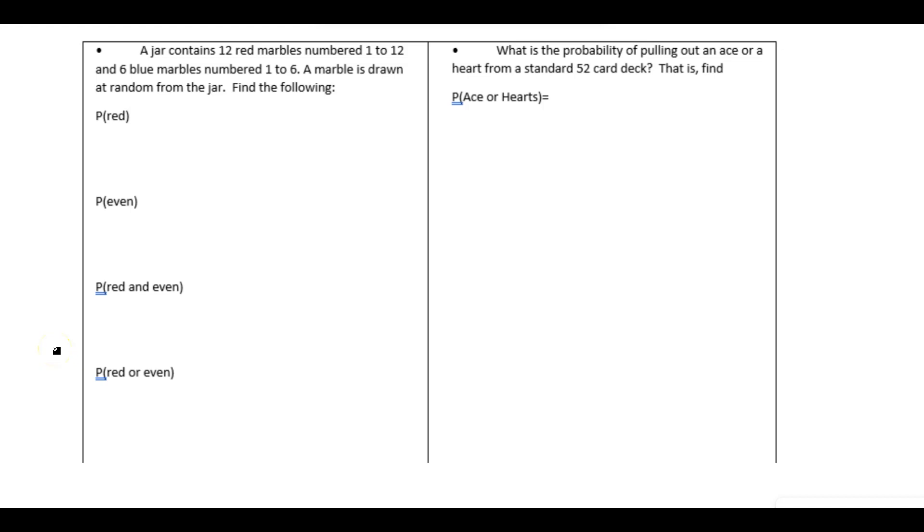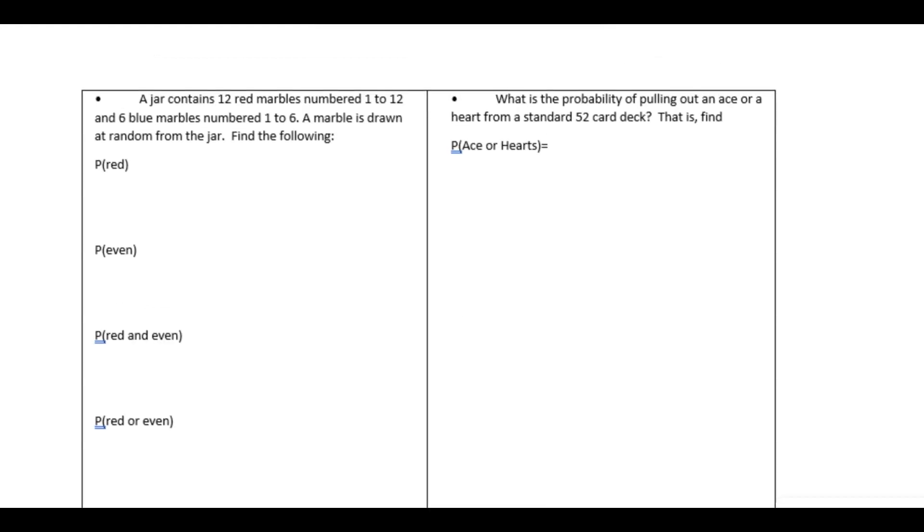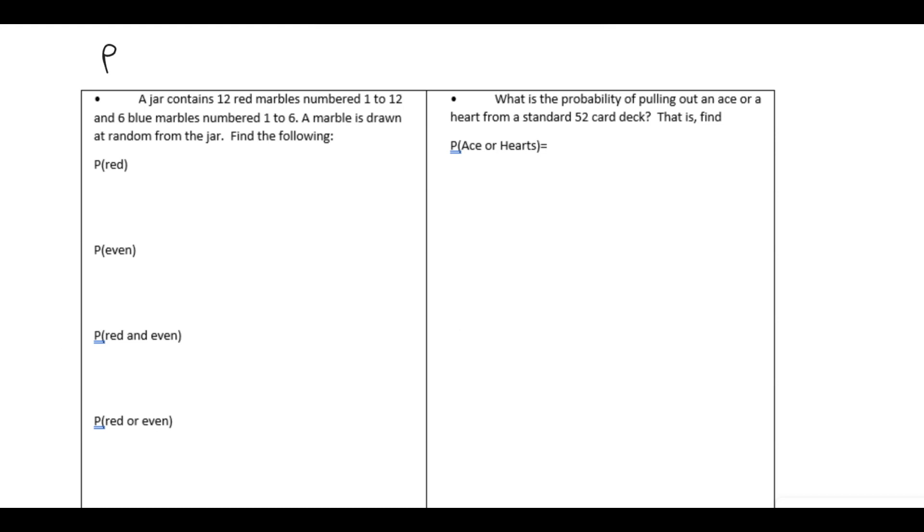Let's take a look at probabilities of an event or another event. So first off, there's a rule that says the probability of A or B equals the probability of A plus the probability of B minus the probability of A and B.